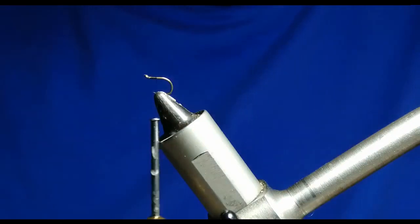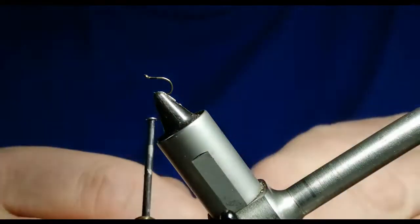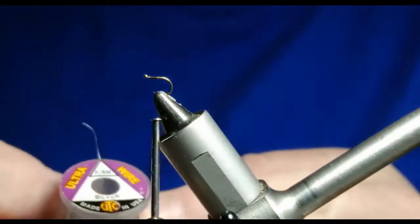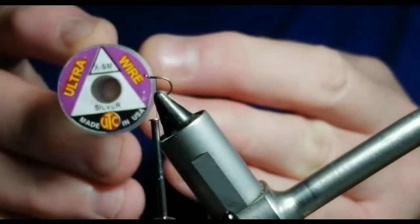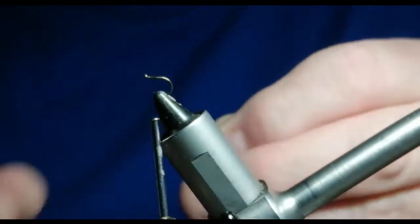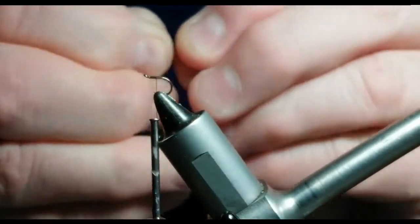What we're going to use for the ribs is extra fine wire, silver. Tie that in along the side of the body.